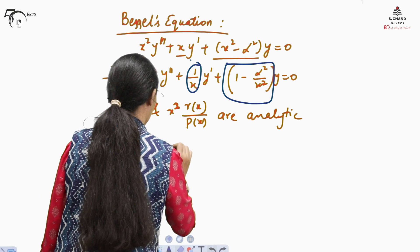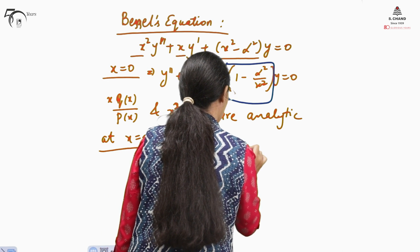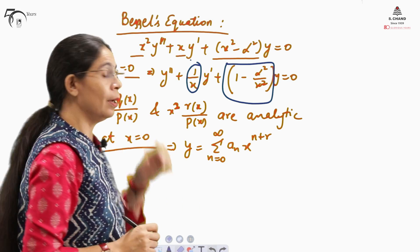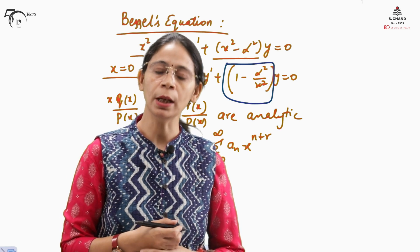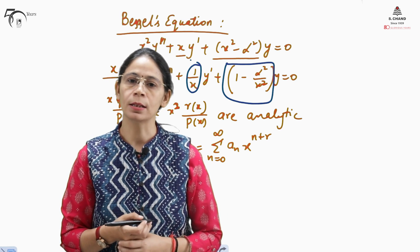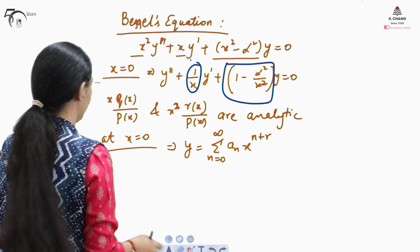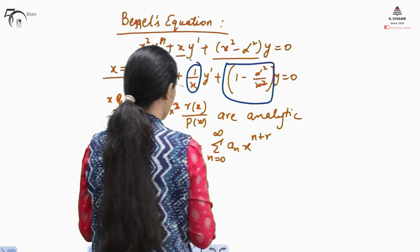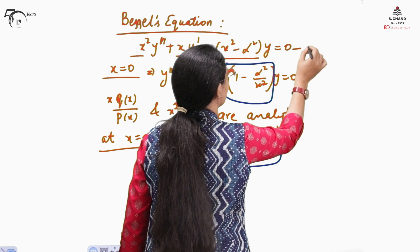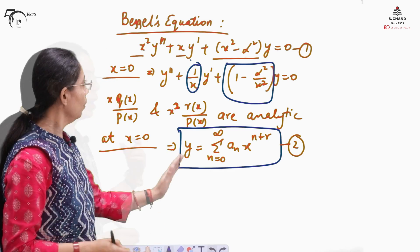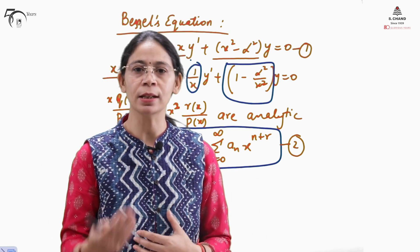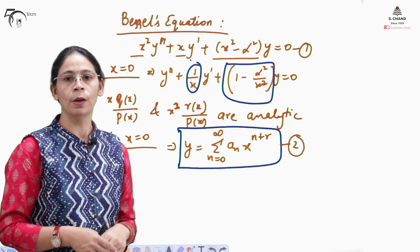The assumption of the solution using the Frobenius method is y = sigma a_n x^(n+r), where x-naught is 0 and n varies from 0 to infinity. Let us call this expression equation (2) and the original Bessel's equation as equation (1). The next step is to substitute this assumption and its derivatives into the given differential equation.